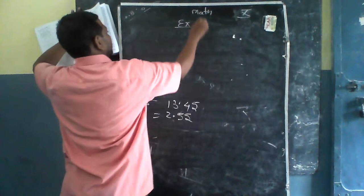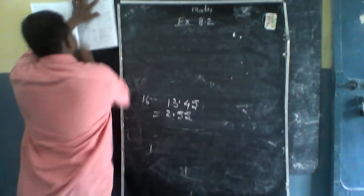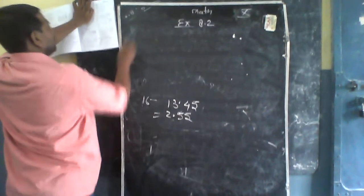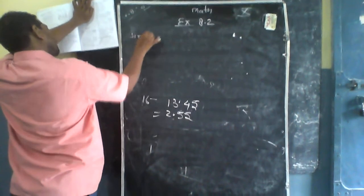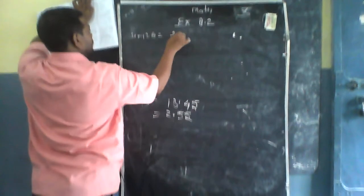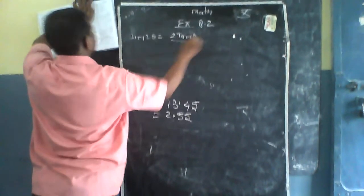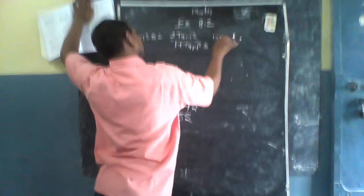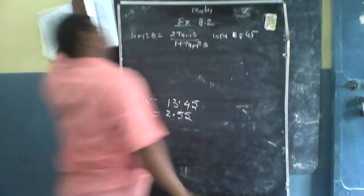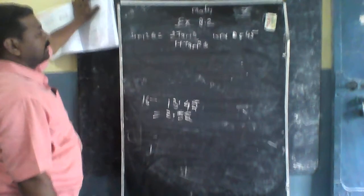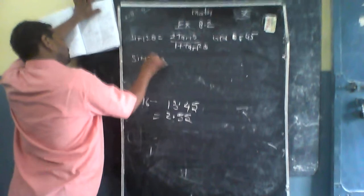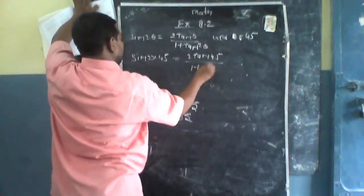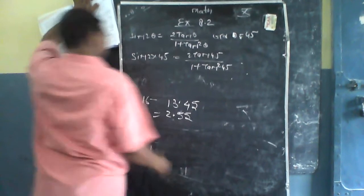8.2 Trigonometry चल रही है। देखो इदर अब यह सत्यापित करने हैं — Prove that sin2θ = 2tanθ / (1 + tan²θ) जबकि θ = 45। इसमें हमें θ का मान रखना है। sin 2×45 = 2·tan45 / (1 + tan²45)।